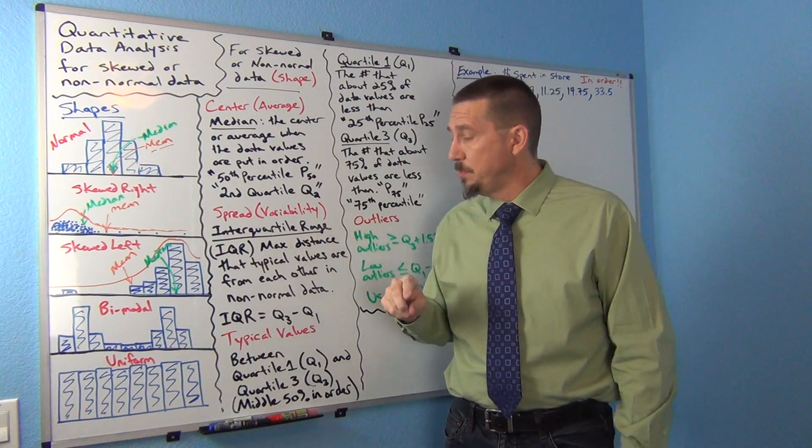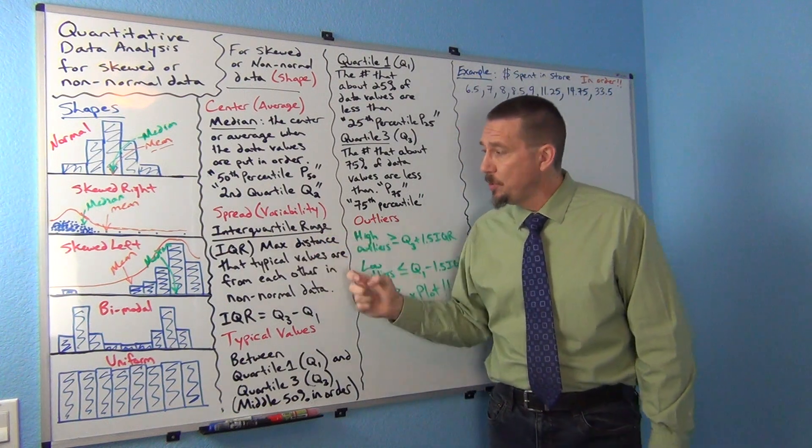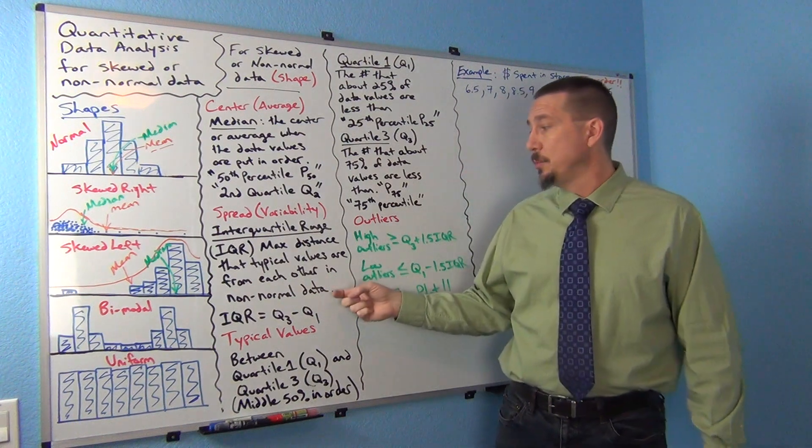And that's what interquartile range measures. It measures the maximum distance that typical values are from each other in non-normal data.